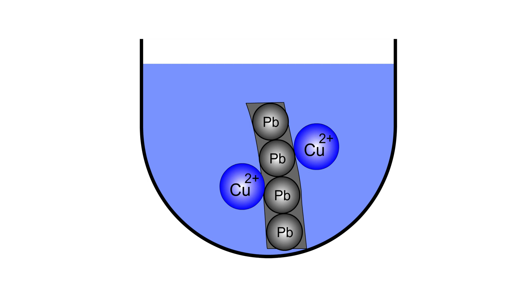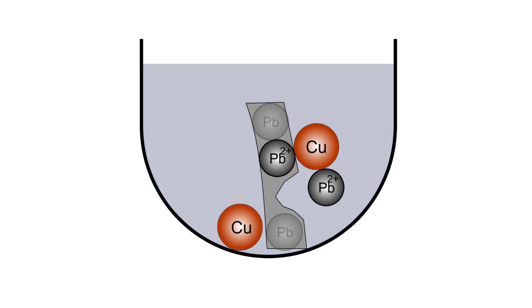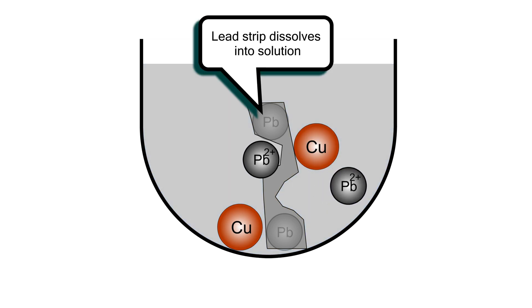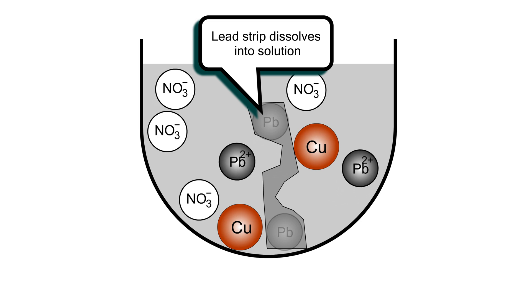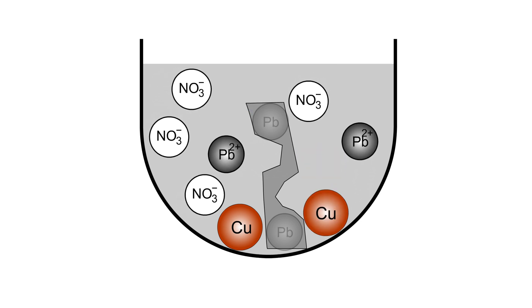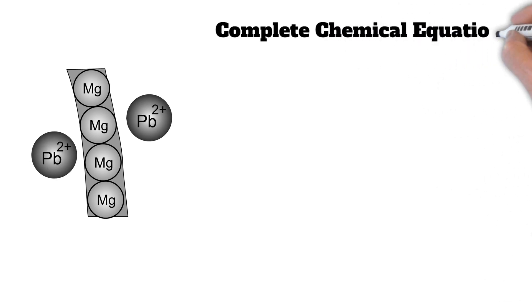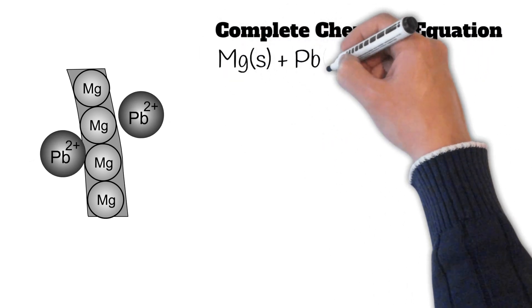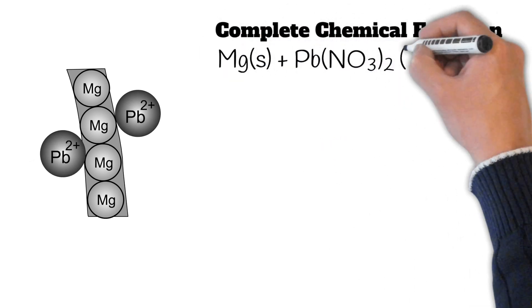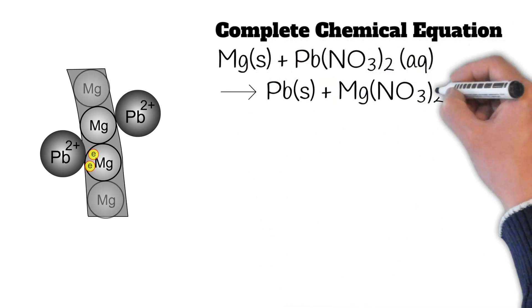A lead atom donates two electrons to a copper two ion, producing lead two ions and copper metal. A solution of lead two nitrate is produced, and the blue color of the copper two nitrate solution becomes less intense.